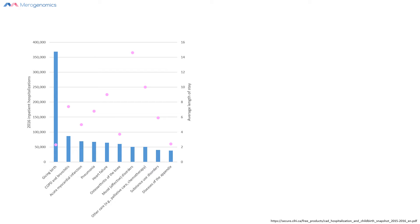We studied this data, and on the left-hand side you can see the top causes of hospitalizations in Canada for different conditions. In blue bars you can see the number of hospitalizations required, whereas the pink circles show the number of days required per each different condition leading to hospitalization.